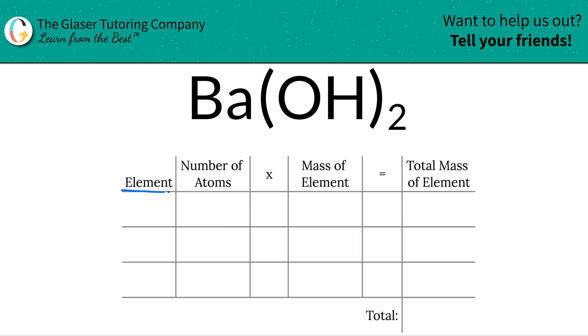So the first step, I need to write down the elements that I see in the compound. So I see barium, Ba, I see oxygen, and I see hydrogen. The next step will be to write down now the number of atoms of each element of the compound.